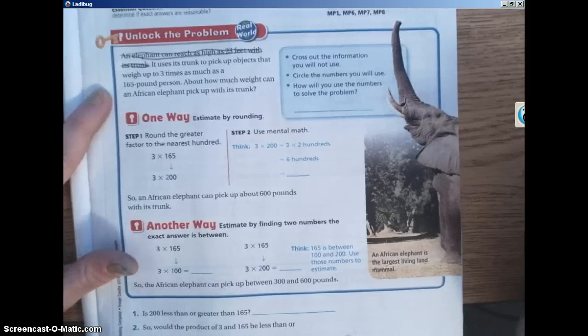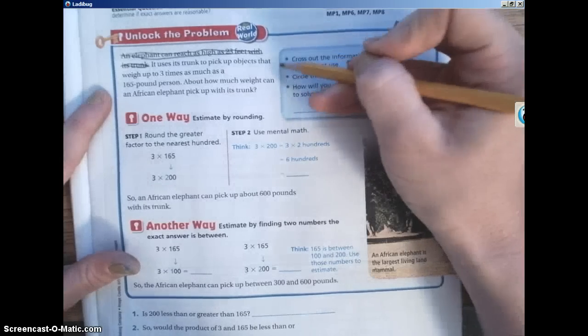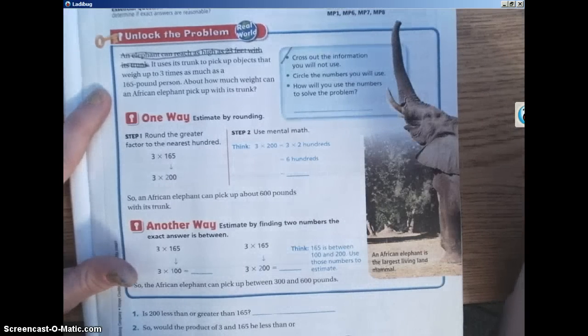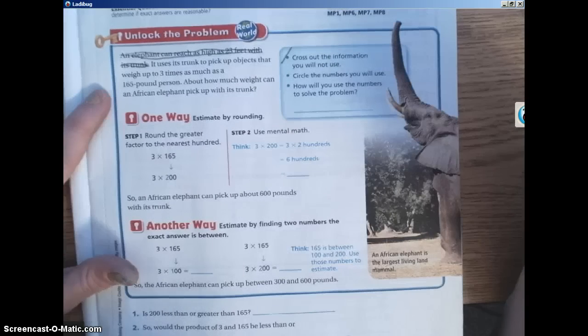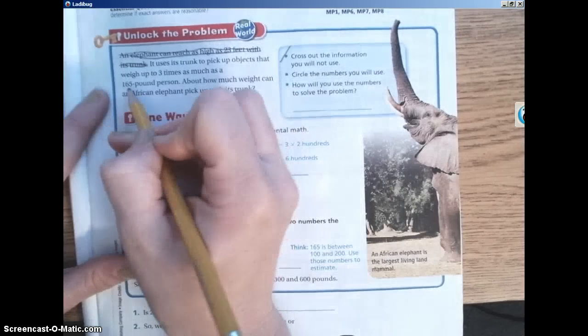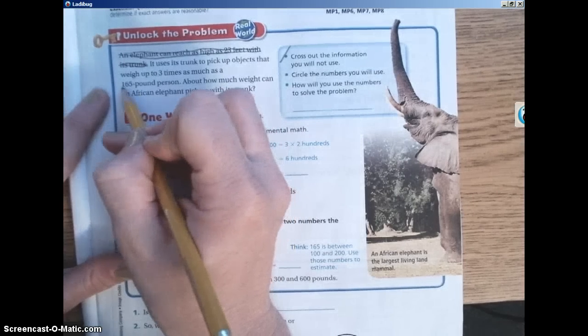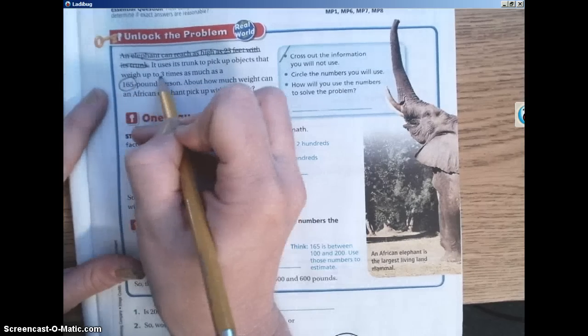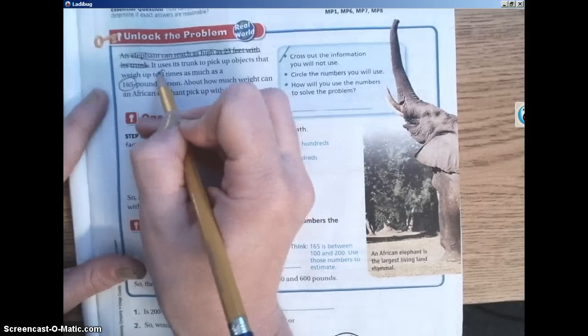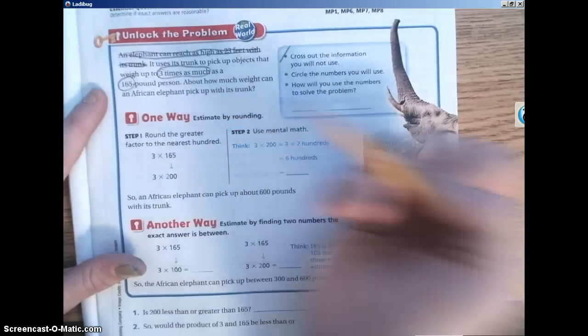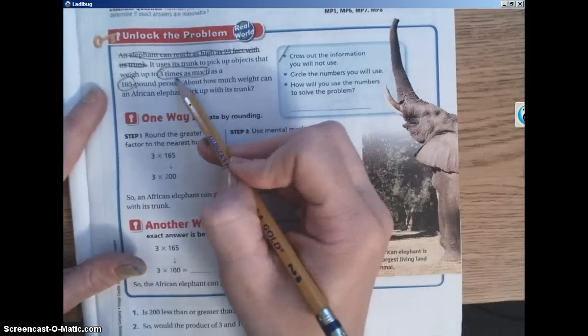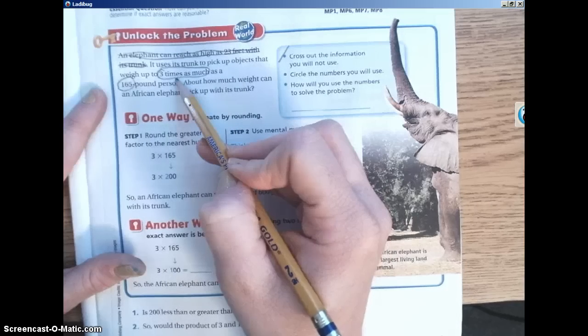The next thing that we're going to do is circle the numbers that we're going to use. Circle the clues that you need to use. So we know that they're usually numbers. So 165-pound person and three times as much. I'm already thinking in my head that this is probably going to be multiplication because it says three times as much.